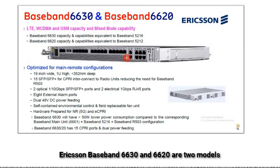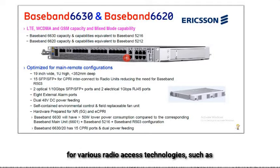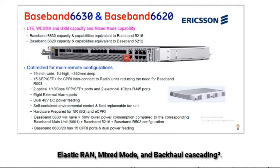Ericsson Baseband 6630 and 6620 are two models of baseband units that are part of the Ericsson radio system. They provide switching, traffic management, timing, baseband processing, and radio interfacing functions for various radio access technologies such as LTE, WCDMA, GSM, and 5G NR. They also support features such as Ericsson spectrum sharing, massive IoT, NR upper layer VRAN, elastic RAN, mixed mode, and backhaul cascading.